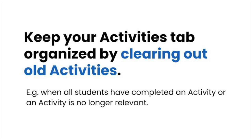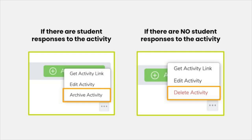When all students complete an activity or an activity is no longer relevant, clear it from your activities tab. To clear out old activities, click the three dots on the activity. If there are student responses, you'll be prompted to archive — don't worry, student responses are not deleted, this just clears the activity from your tab. If no students have responded, you'll be prompted to delete it. You can always go back to my library and assign it again.